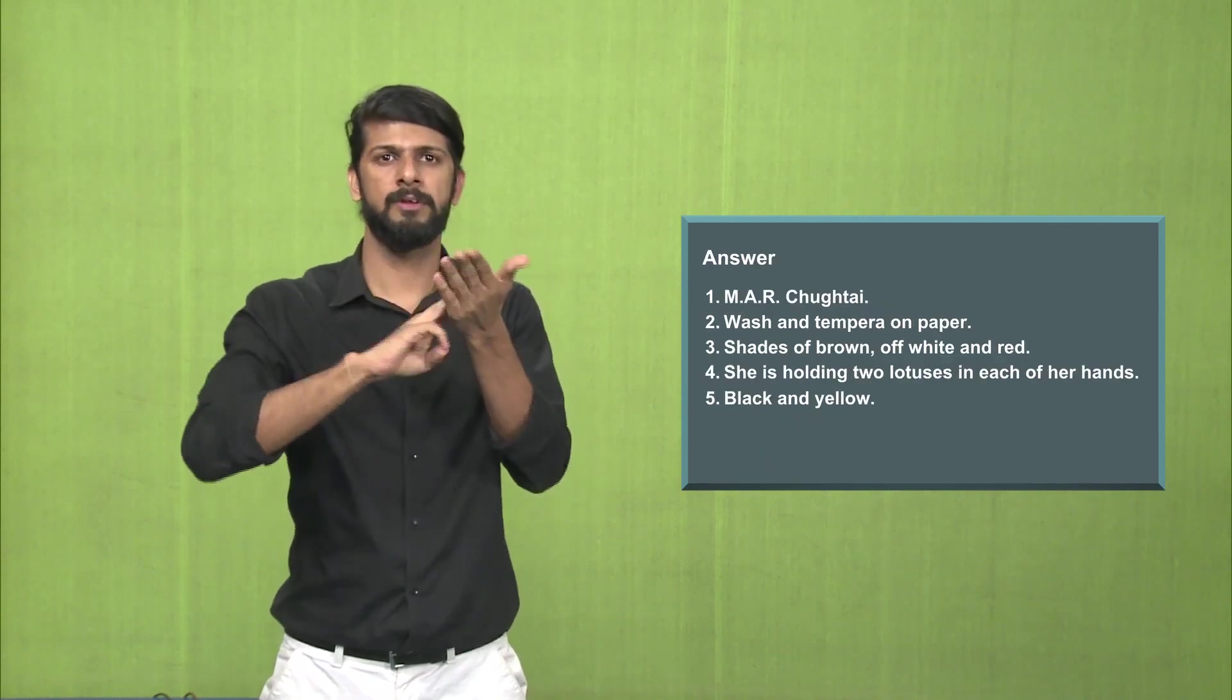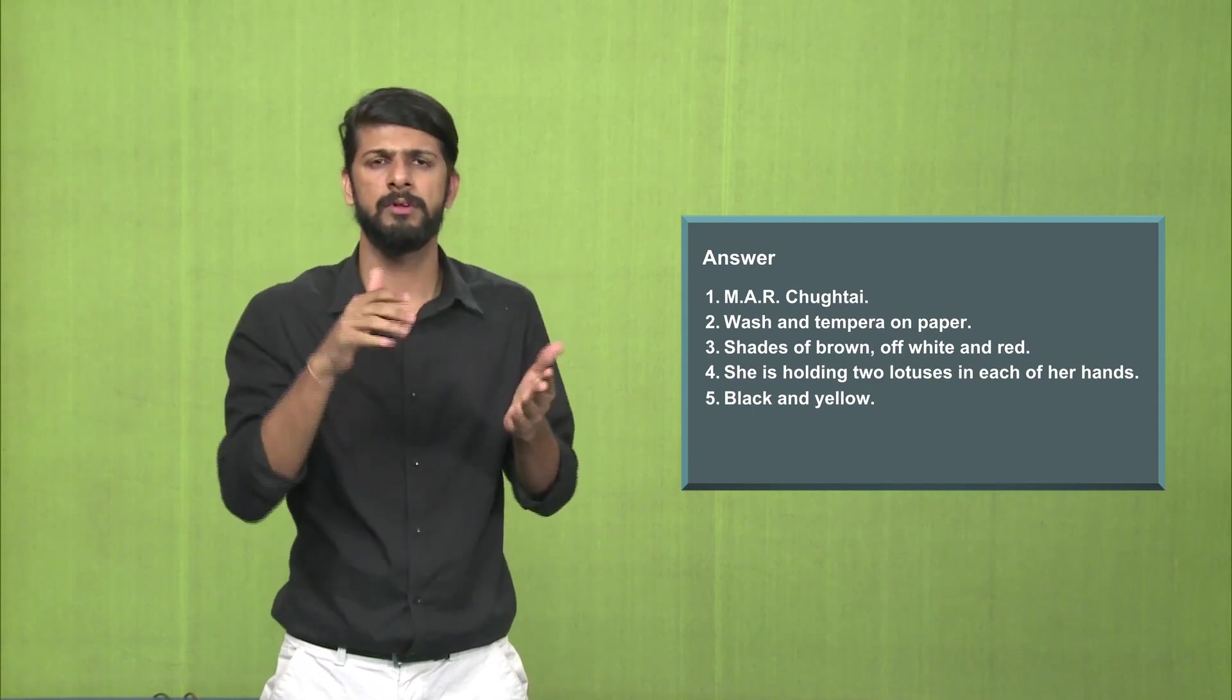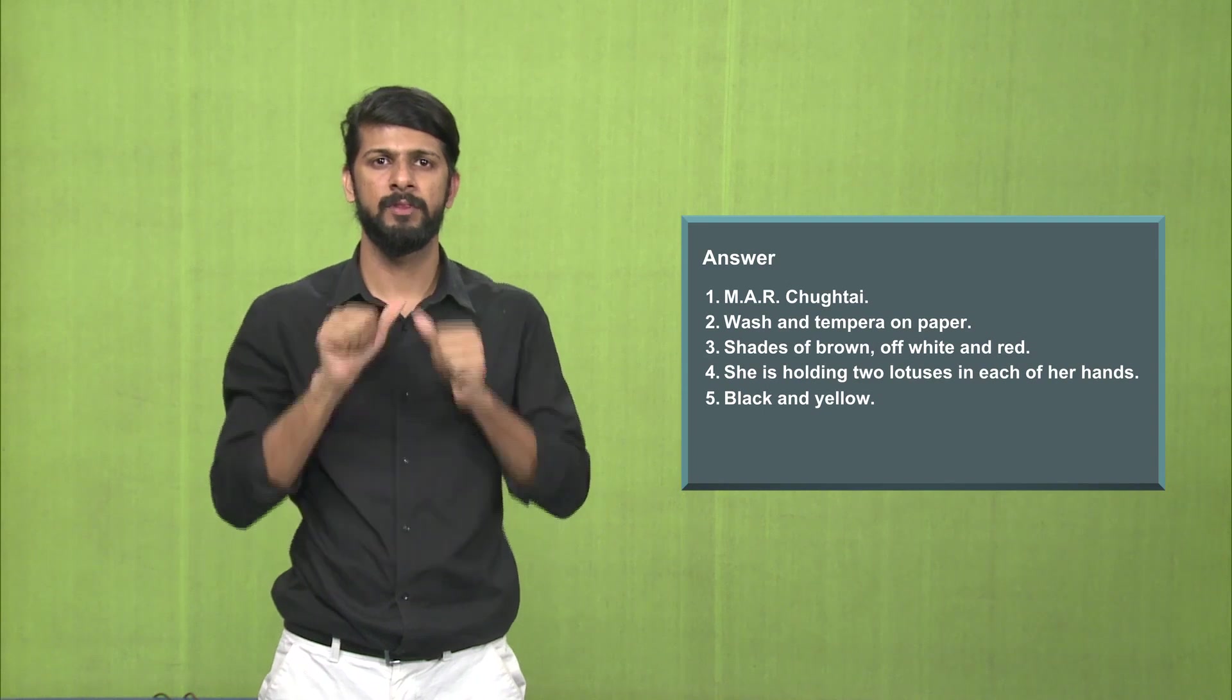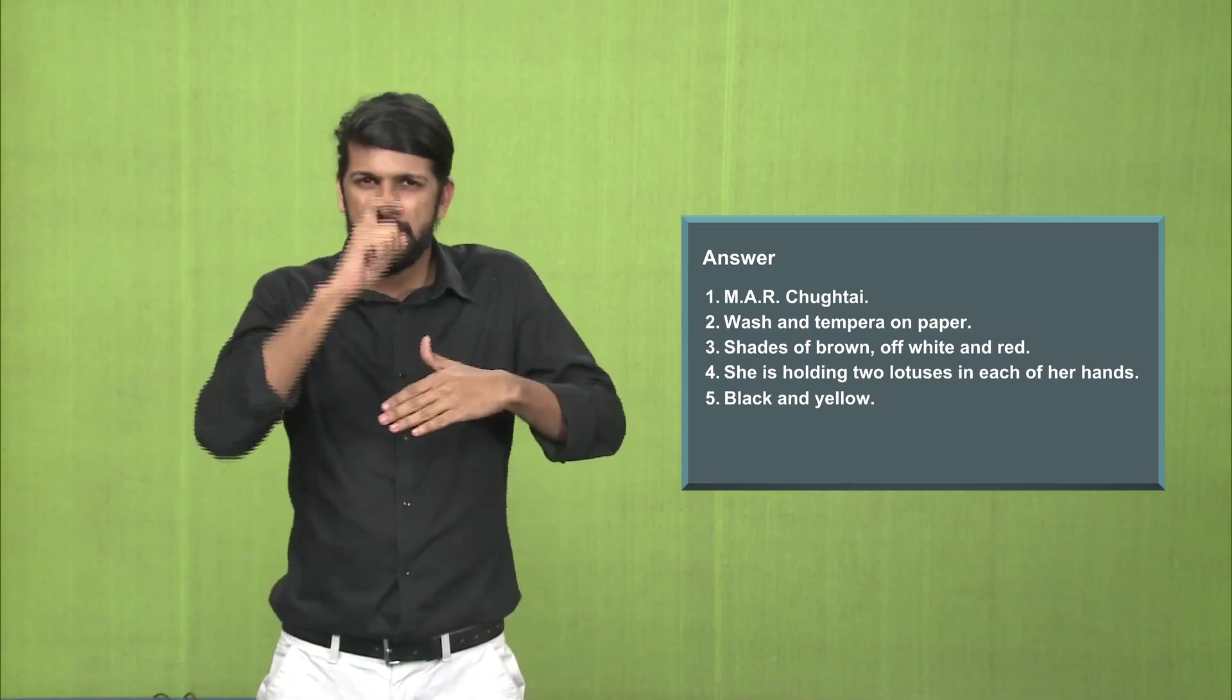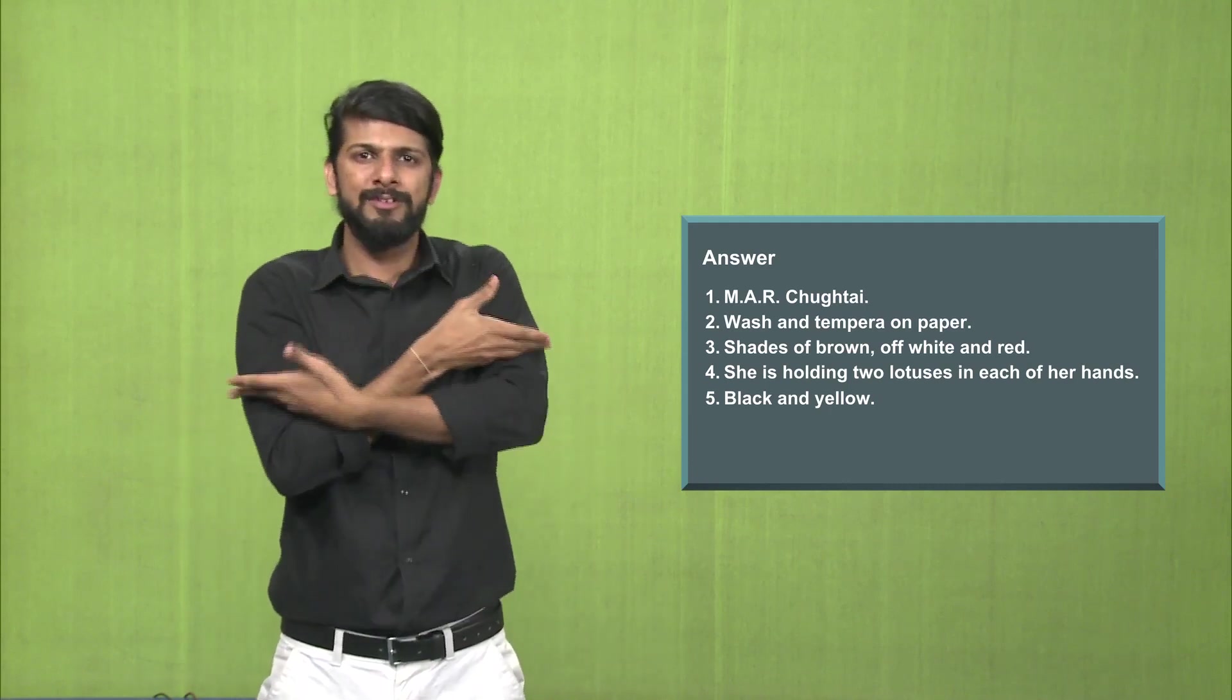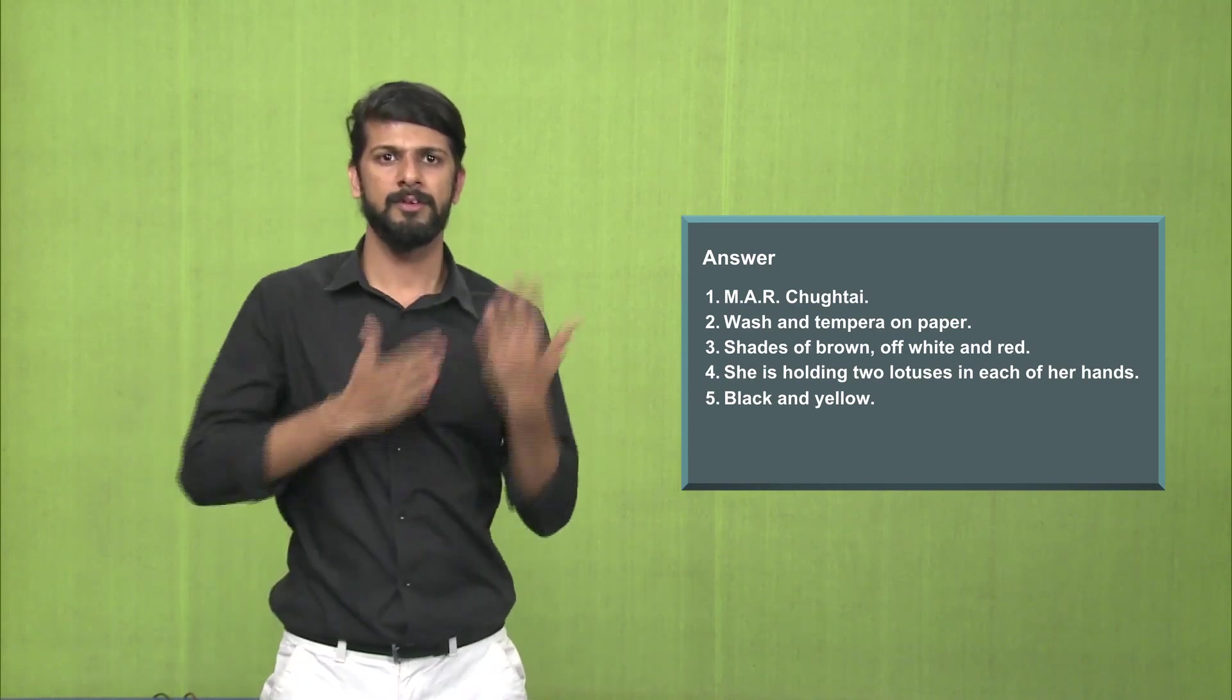Answers first: the artist of this painting is M.A.R. Chuktai. Answer number 2, the medium and technique is wash and tempera on paper. Answer number 3, the dress worn by Radhika is called Ghagra, that is the violet dress on the lower torso, then the choli on the upper torso and then the yellow dupatta. That is the dress she is wearing.